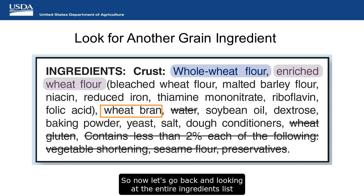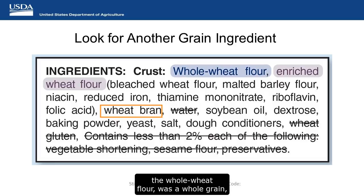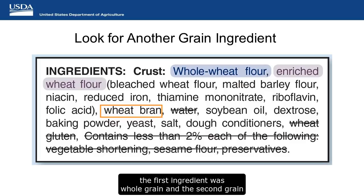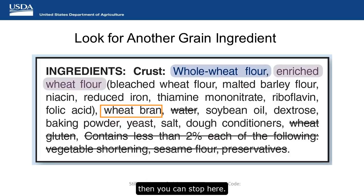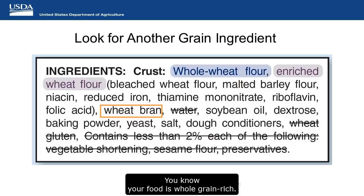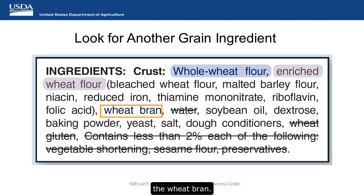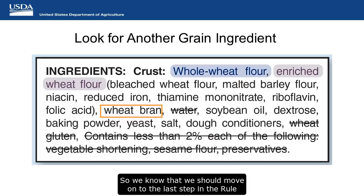Let's go back and look at the entire ingredients list for the pizza crust. The first grain ingredient — whole wheat flour — was a whole grain, and the second grain ingredient — enriched wheat flour — is enriched. If a product had only two grain ingredients and the first was whole grain and the second was whole grain, enriched, bran, or germ, you could stop there — your food is whole grain rich. For this pizza crust, we see wheat bran also listed, so we should move on to the last step of the rule of three and look at the third grain ingredient.